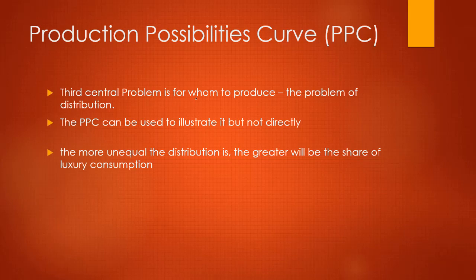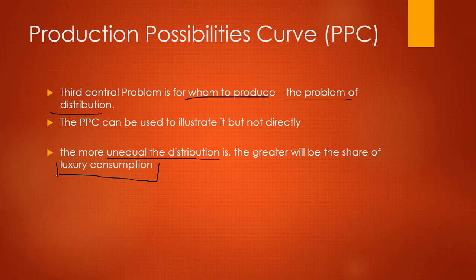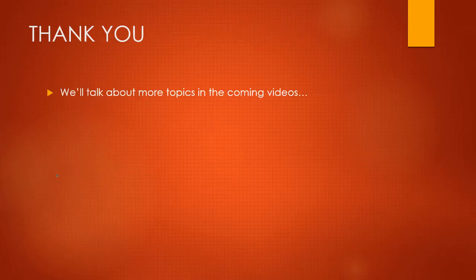The third central problem is: for whom to produce? A product that is produced has to be utilized by someone, so the question is who to produce it for. This is essentially the problem of distribution. PPC can be used to illustrate this, though not directly. One key point: the more unequal the distribution becomes, the greater will be the share of luxury consumption — highly costly products will be consumed more.